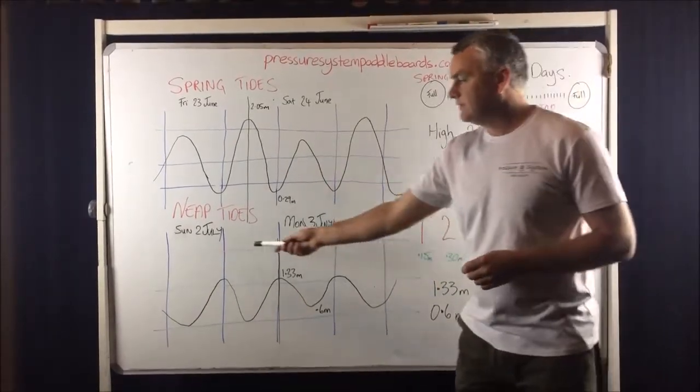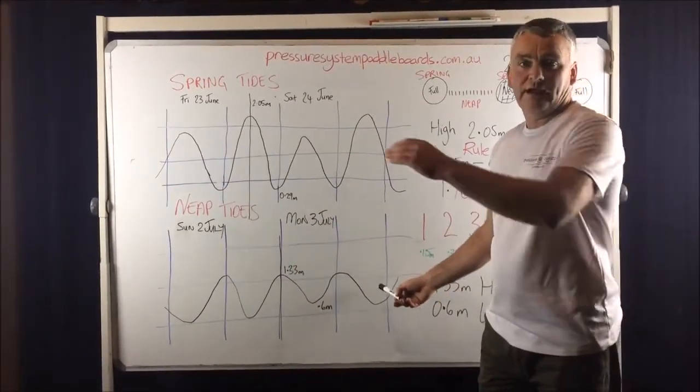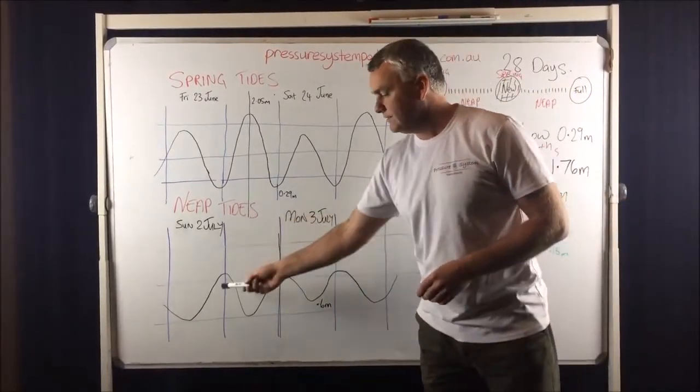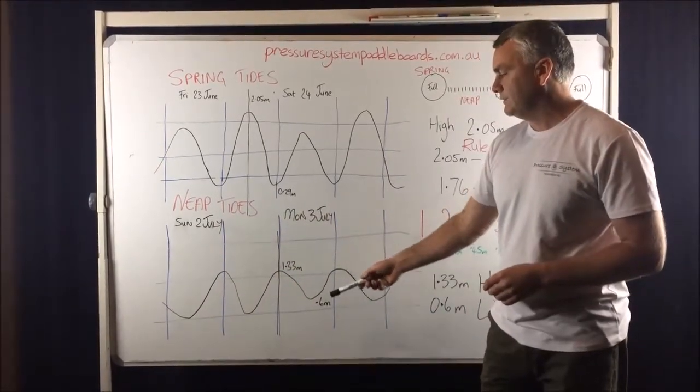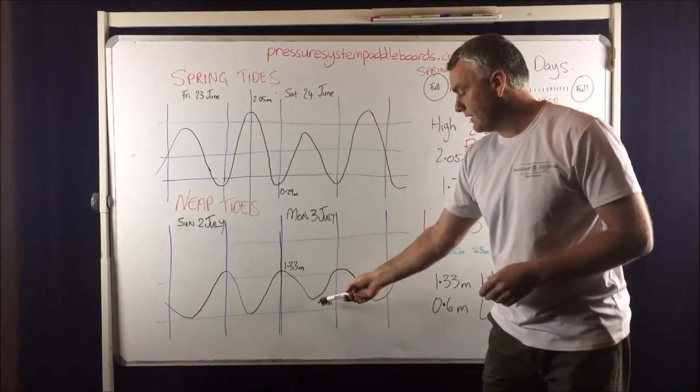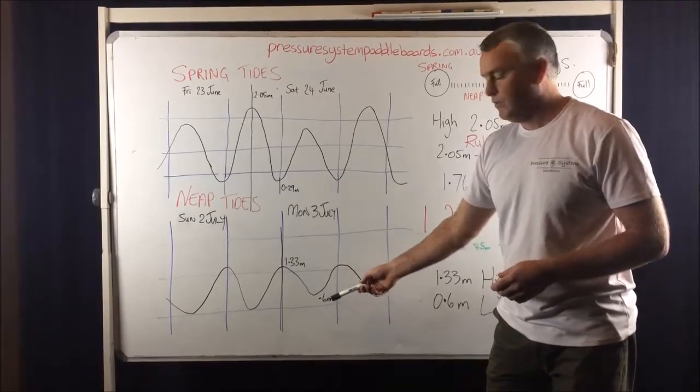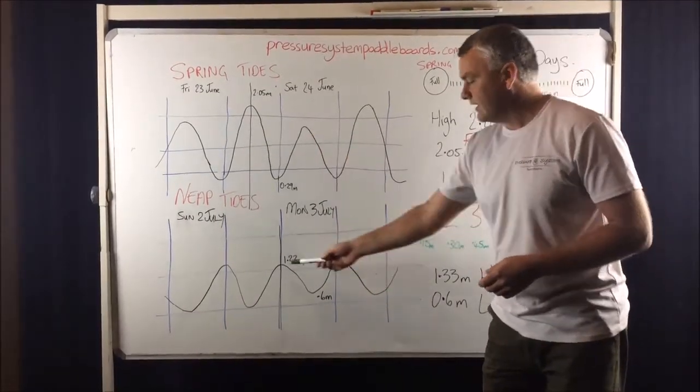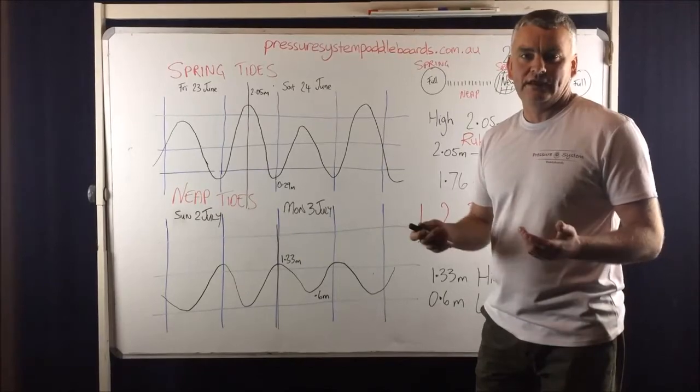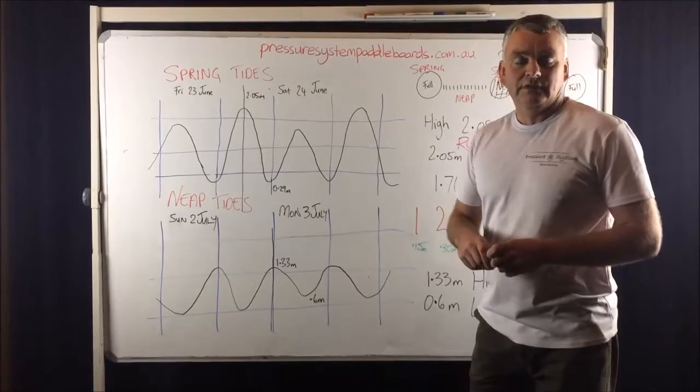Now if you have a look down here, this is the 2nd of July and the 3rd of July. This is still coming up, I looked a little bit forward on the tide chart. This is the neap tide cycle. So if you have a look here on Monday the 23rd of July, the high is only 1.33 metres and the lows, or one of the lows, is only 0.6 of a metre. So it's only a difference of 0.7 of a metre in comparison to 2 metres. So in that 6 hour period there's a lot less water moving in and out of your local estuary. That'll obviously be a lot easier to paddle against.